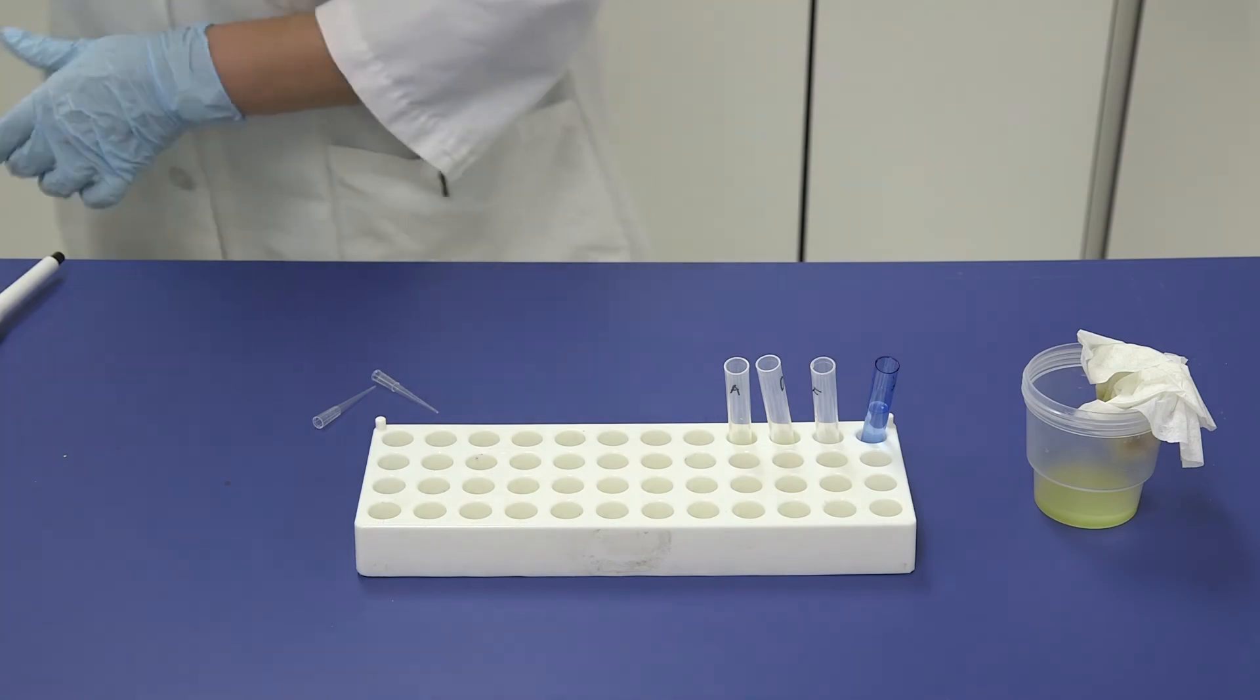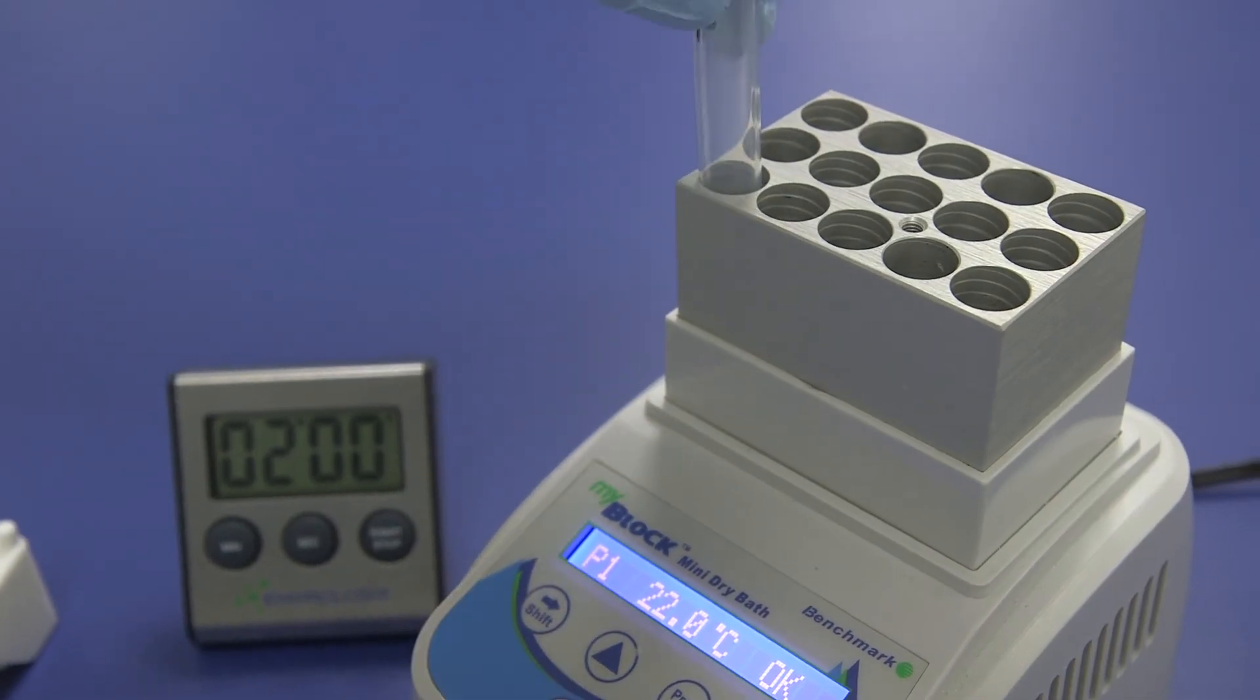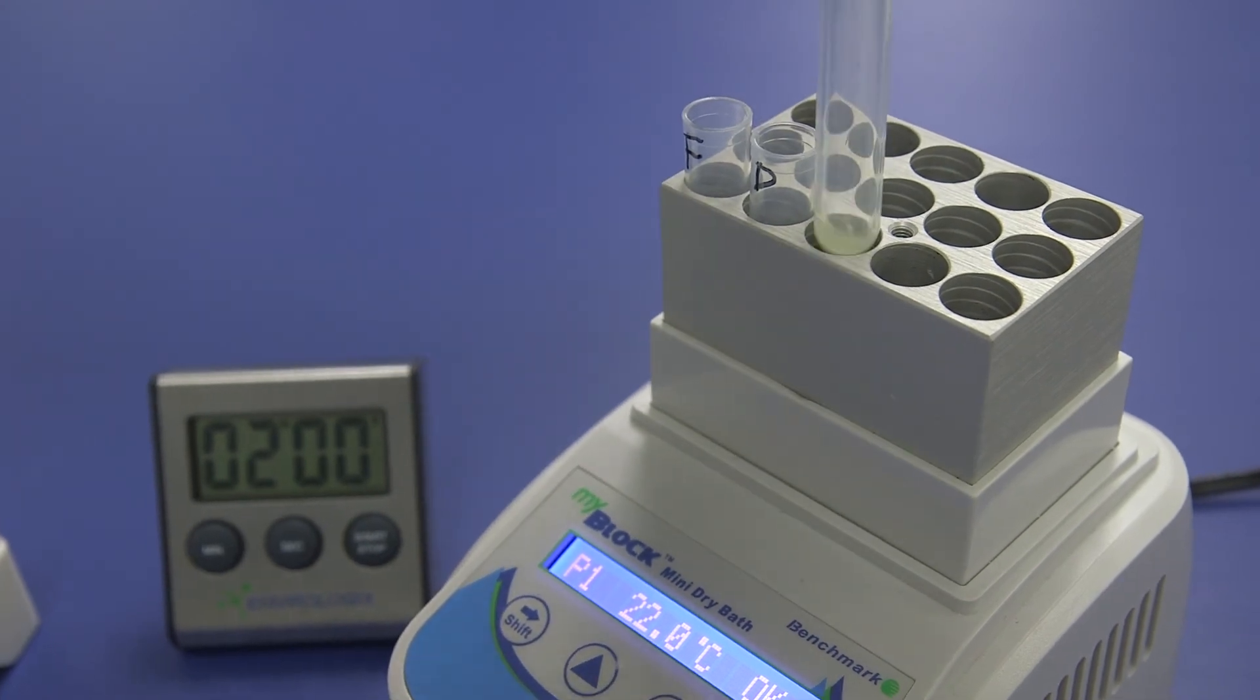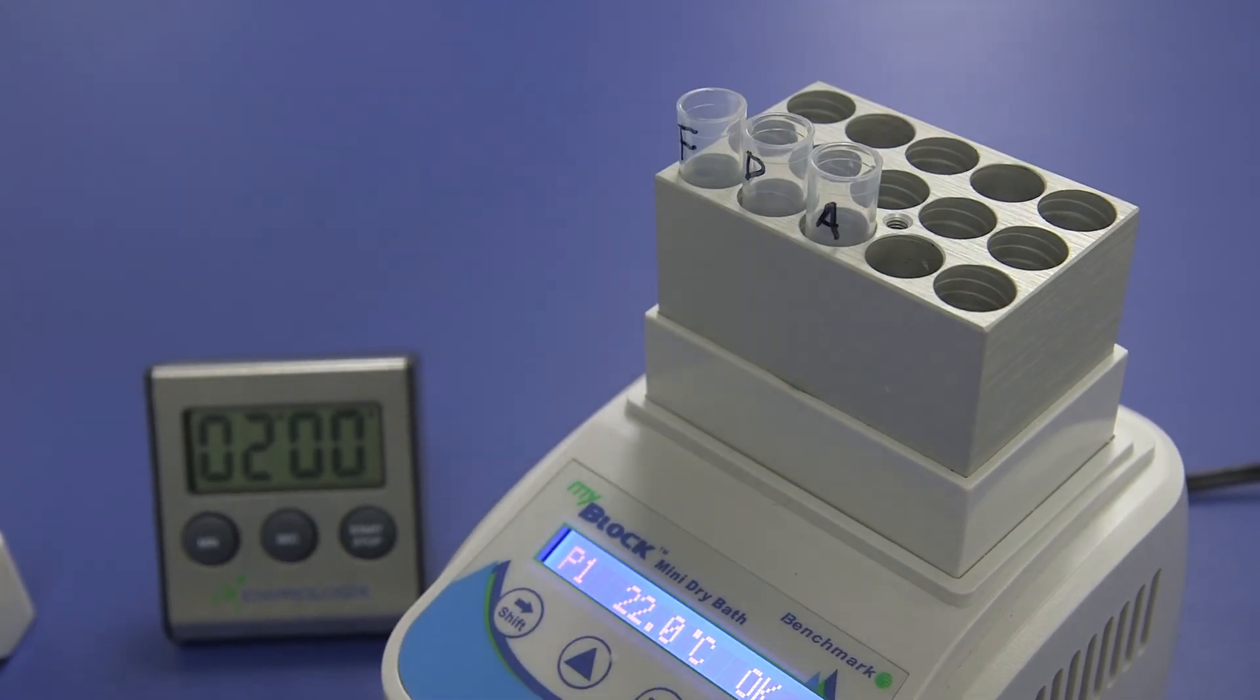Next, place the clear reaction tubes labeled F, D, and A in the incubator and acclimate for two minutes. The acclimation step is only required if room temperature is outside 20 to 24 degrees Celsius or 68 to 75 degrees Fahrenheit.